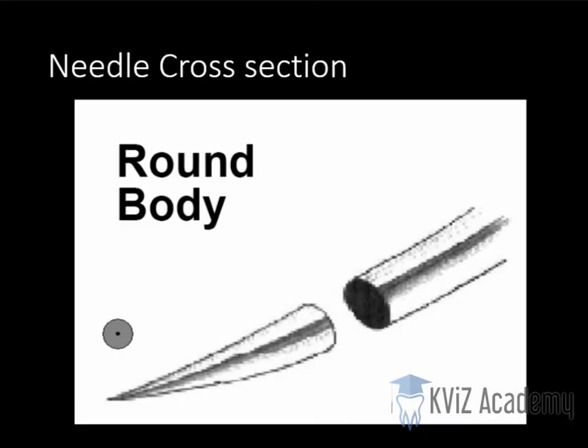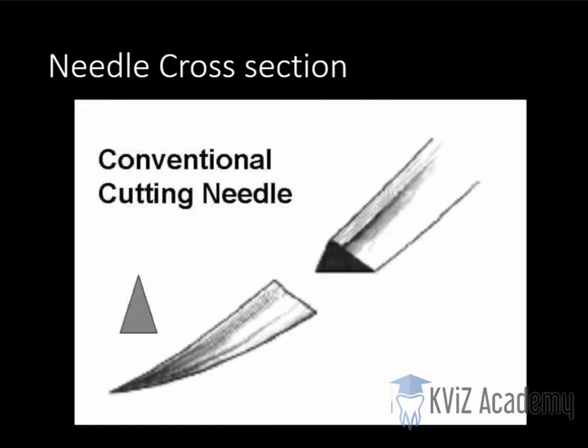First is the round body — the body of the needle is round in shape, as you can see. Then we have conventional cutting, which is triangular in shape with one cutting edge towards the inner curvature. These three are the cutting surfaces, and this one cutting surface is towards the inner curvature — that is conventional cutting.